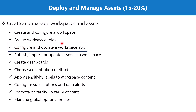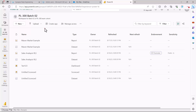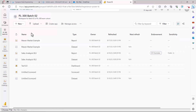We have discussed reports and dashboards in a lot of detail, and we saw that the third most important asset in a workspace is an app, which is used to distribute or share the data. So now let's go back to a Power BI workspace and see how we can configure and update a workspace app. Here I am inside the workspace that we used to create the dashboard, with a few reports and a dashboard. We are now going to explore this third most important way of distributing or sharing data.